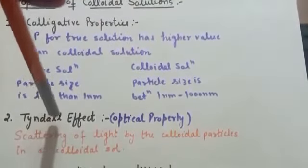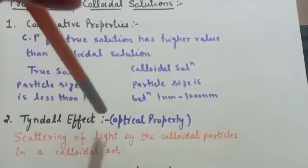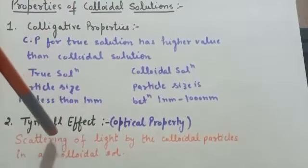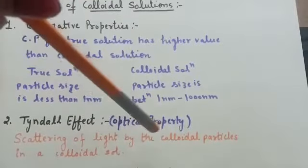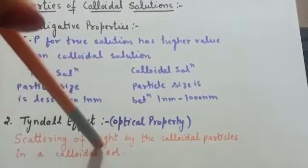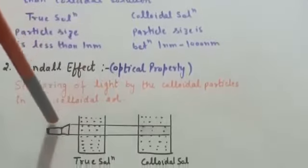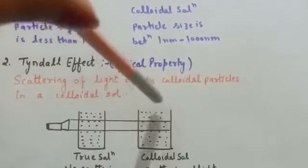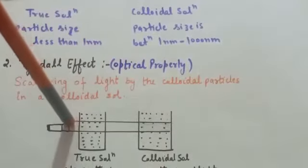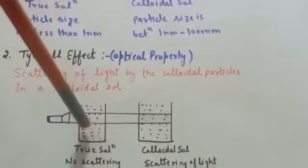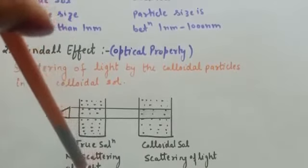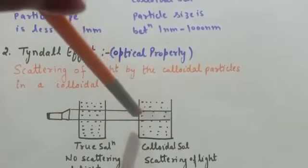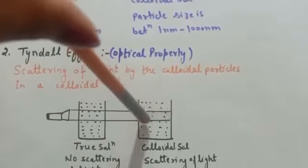The next property is the Tyndall effect, which is an optical property of colloidal solution. The Tyndall effect is the scattering of light by colloidal particles in a colloidal solution. For example, when a beam of light is passed through a true solution, there is no scattering — the light simply passes through. But when the beam is passed through a colloidal solution, scattering of light is observed.